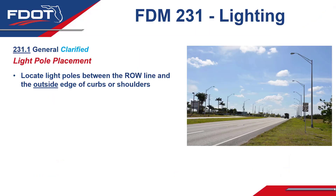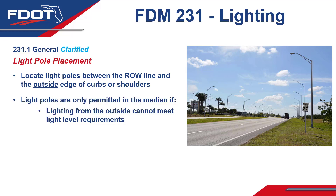First up is the General Section 231.1, where we're discussing light pole placement. We want to reemphasize existing policy and clarify that light poles are to be located between the right-of-way line and the outside edge of curbs or shoulders. Essentially, do not place light poles in the medians by default. Light poles are only permitted in the median if lighting from the outside cannot meet the light level requirements, so median placement is a last resort.